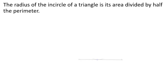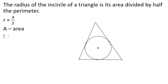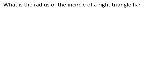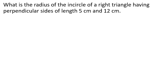The radius of the incircle formula is r equals A divided by s, where A is the area and s is the semi-perimeter. What is the radius of the incircle of a right triangle having perpendicular sides of length 5 cm and 12 cm?